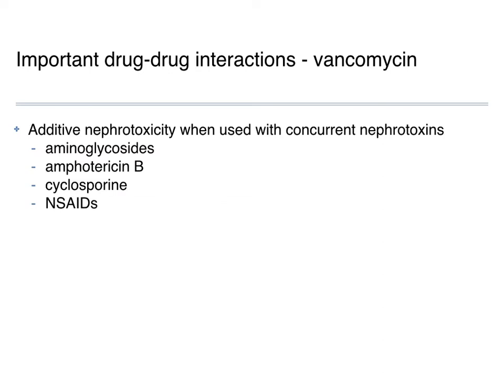Drug interactions: like aminoglycosides, the major concern is concurrent nephrotoxins causing additive nephrotoxicity. Aminoglycosides, amphotericin B — colloquially referred to as 'amphoterrible' because it's so bad on your kidneys — combinations of vancomycin and amphotericin are problematic. Cyclosporine and NSAIDs are also concerns — many of the same drugs we discussed with aminoglycosides, just adding that additive damage to the kidneys.